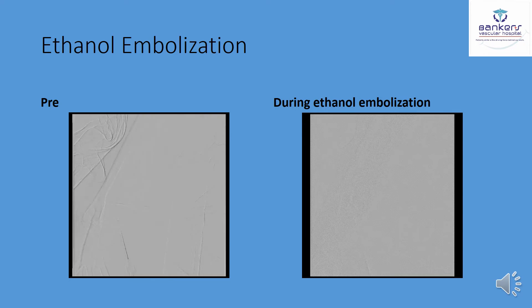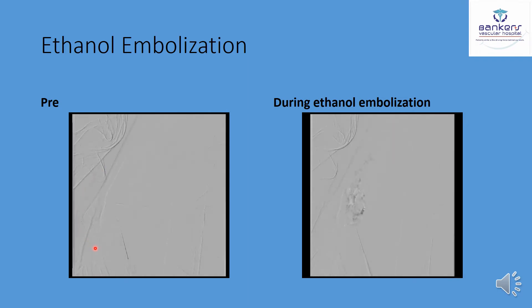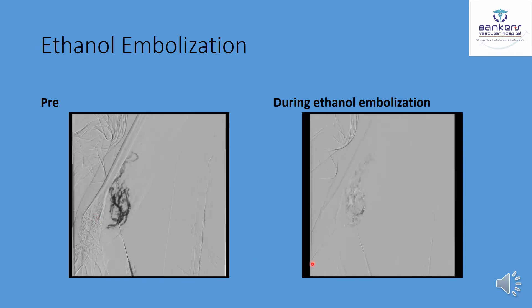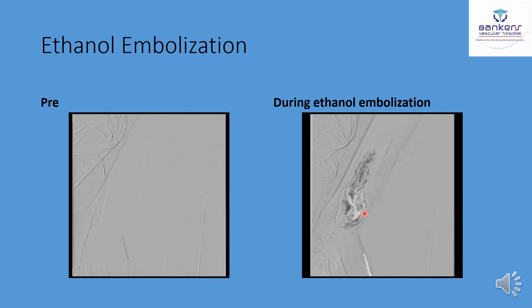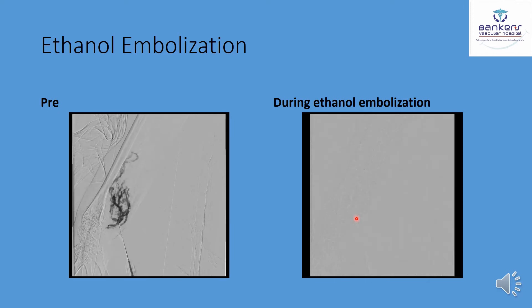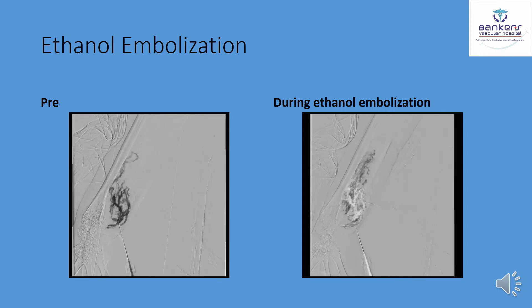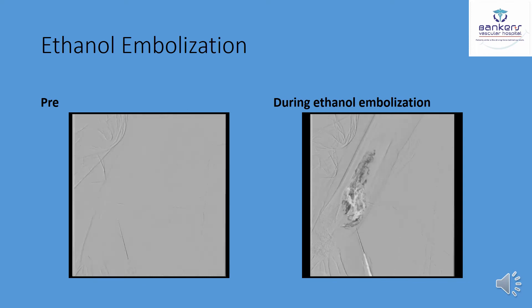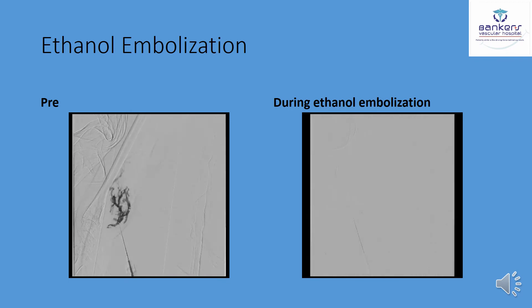Now, how the procedure works. These are direct intranidal injections of contrast media. By injecting contrast, I get a rough idea of how much volume is needed to fill up the nidus, and I decide the dose of ethanol accordingly. I then inject the ethanol within the nidus — you can see the white area here, which is the ethanol injection. I can trace the ethanol using the negative contrast effect. With this technique, I avoid the ethanol going into the systemic circulation and confirm there is no extravasation.